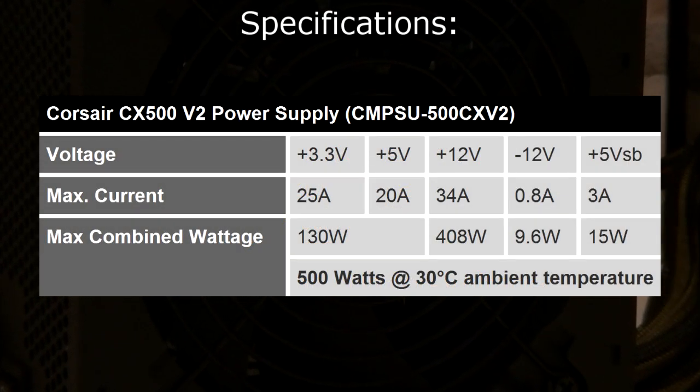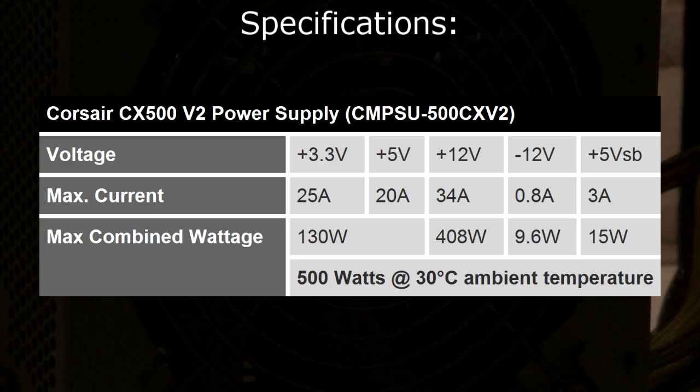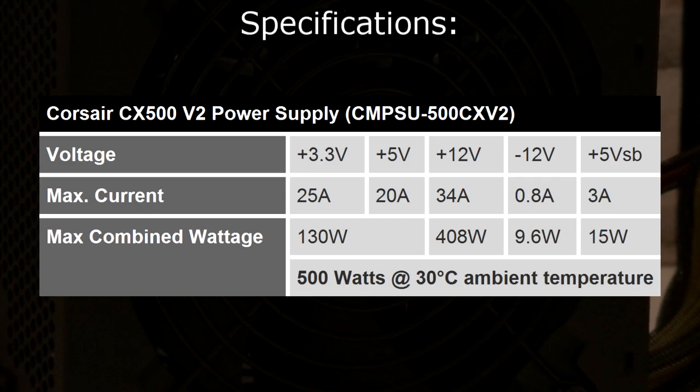Once again it has a single +12 volt rail that has 34 amps on max load and delivers 408 watts. The +3.3 and +5 volt rails have 25 and 20 amps and deliver 130 watts. This power supply will deliver 500 watts at 30 degrees celsius ambient temperature.